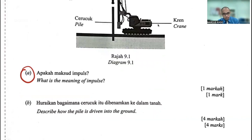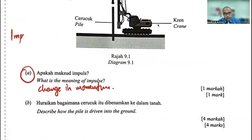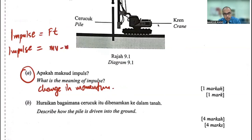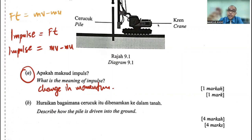What is the meaning of impulse? Impulse is the change in momentum. There are two formulas for impulse. I like to tell students to look at the information given — impulse can be force times time (ft), or it can be the change in momentum (mv minus mu). Usually in impulse questions, they give you enough information for either ft or mv minus mu, so you need to take that into account.